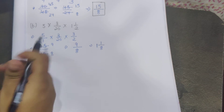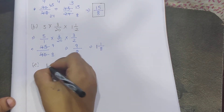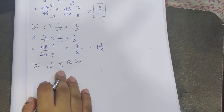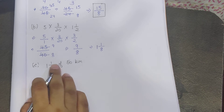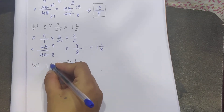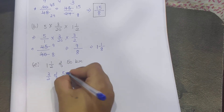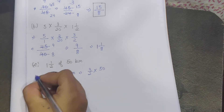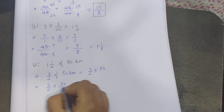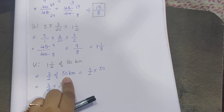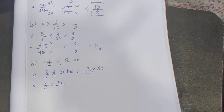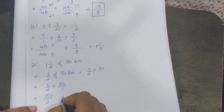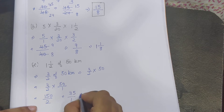Let's take part c: 1½ of 50 km. 'Of' means multiply, so we need to find that part of 50 km. 1½ = 3/2, so we write 3/2 of 50 km, which is 3/2 × 50/1. If there is no denominator written, it means the denominator is 1. So I get 150/2. The common factor is 2, giving 75 over 1, which means the answer is 75 km.